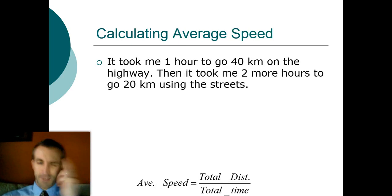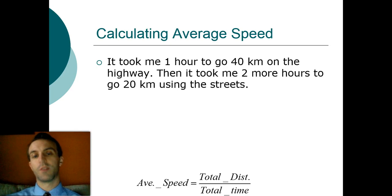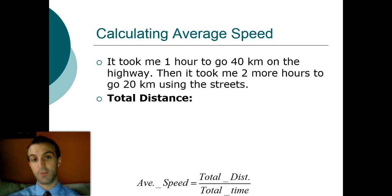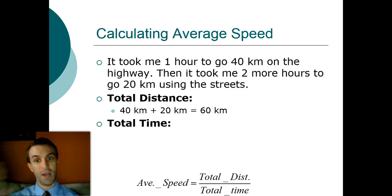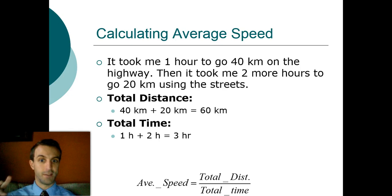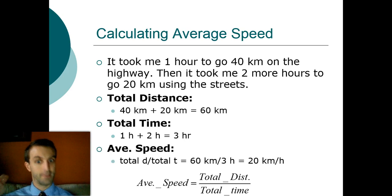So let's math it out. It takes you one hour to go 40 kilometers on a highway, and then it takes you two more hours to go another 20 kilometers using the streets. So what's your speed? In this case, we're looking for what's called average speed. We take all of this stuff into account. Your total distance, 40 plus 20, gives you 60 kilometers. Your total time, you have one hour on the highway, two hours on the streets, that's three hours. Total distance 60 divided by total time three hours is 20 kilometers per hour.